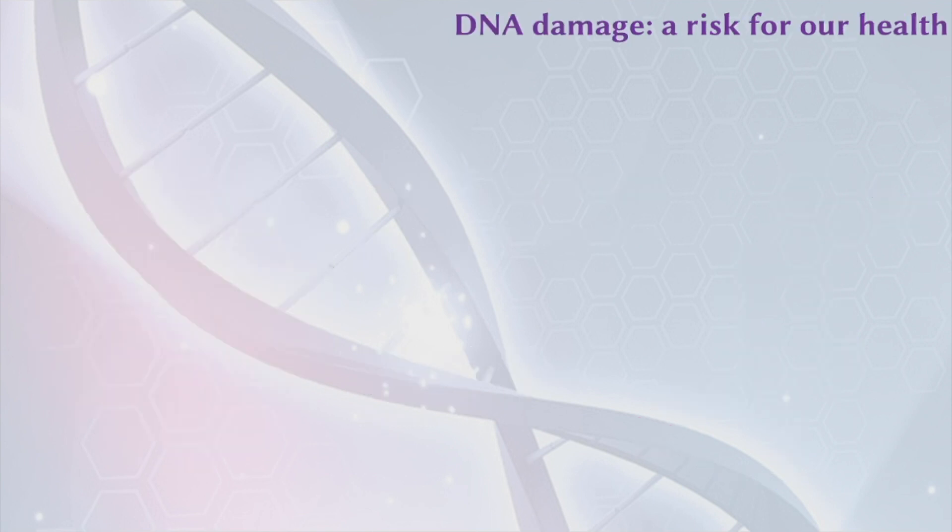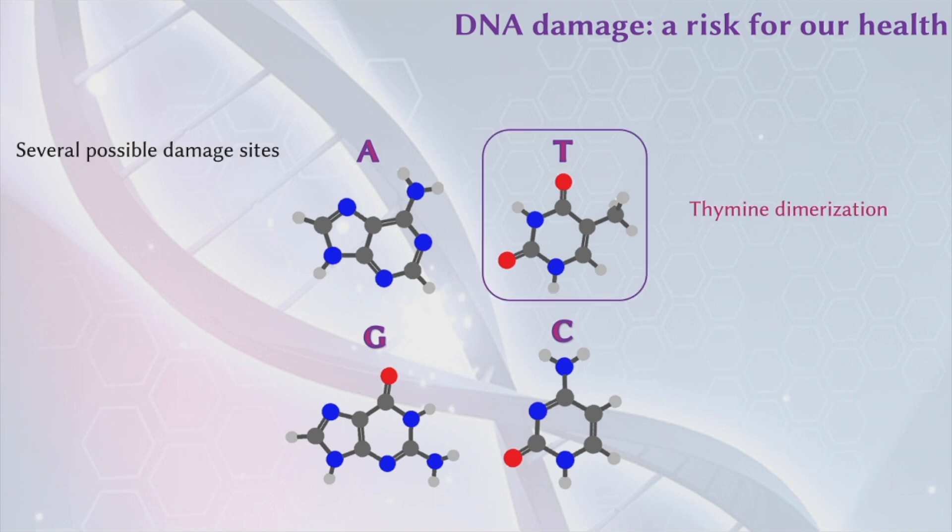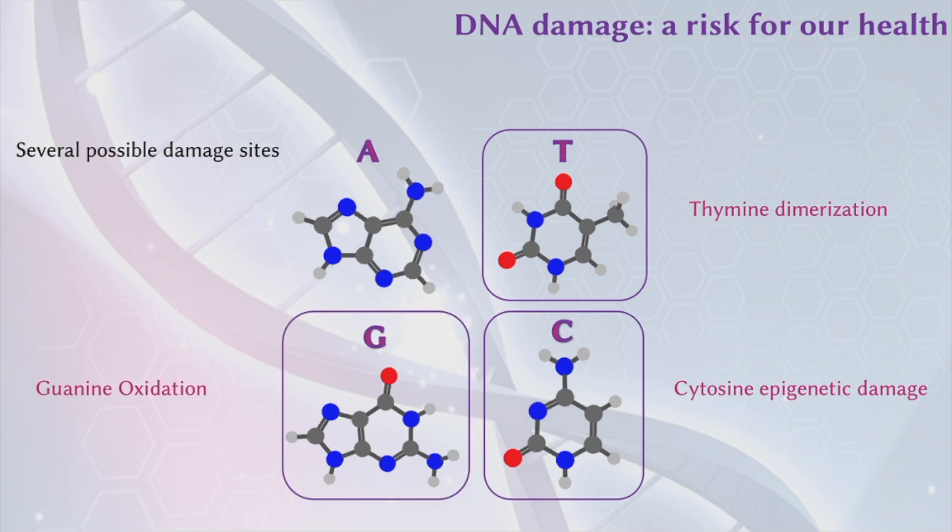DNA is composed by four constituents, molecules called nucleobases: adenine, thymine, guanine, cytosine. These molecules can be the site of DNA damage. For example, we can have thymine dimerization. We can have some epigenetic damage of cytosine. We can have an oxidative damage of guanine. And this can be the cause of several diseases.